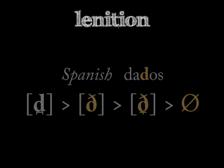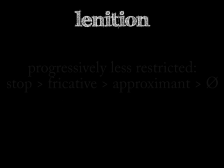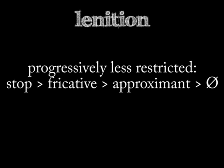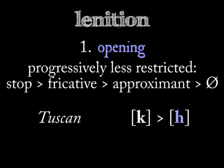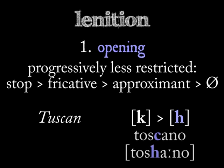There are two main paths a lenited sound may go down. If the sound goes from a stop to a fricative to an approximant, like the Spanish one did, this process of relaxing the airflow is called opening. For instance, Tuscan Italian speakers soften K to a fricative H, so 'Toscano' gets pronounced 'Tos-ha-ano'.